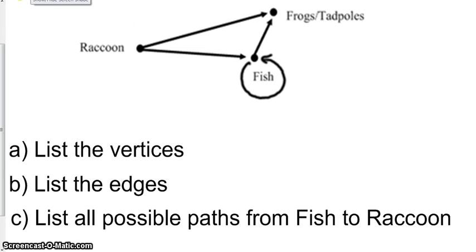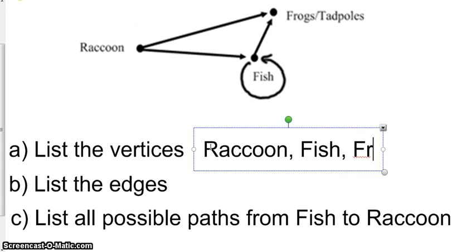Now your vertices are the little dots here. So we have one, two, three. So we have three vertices going on. There is one for raccoons, there is one for fish, and there is one for frogs/tadpoles.